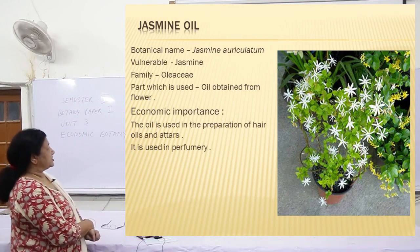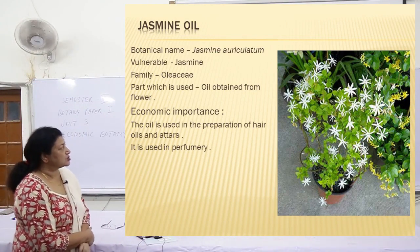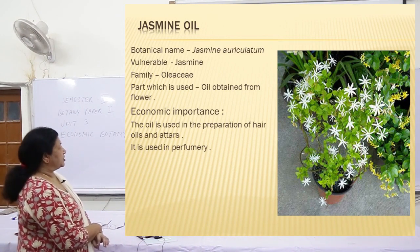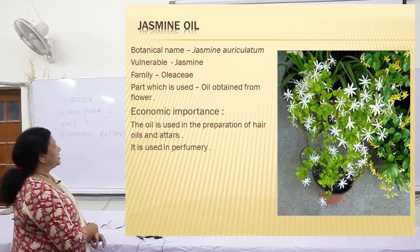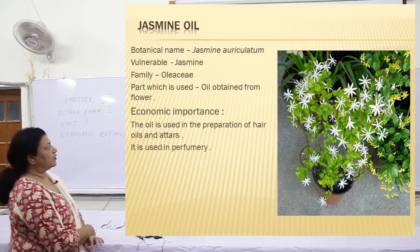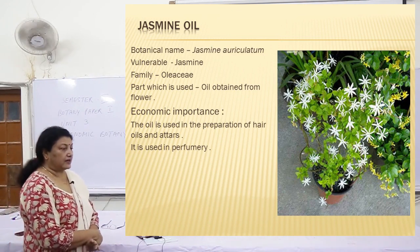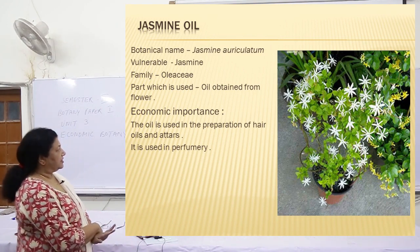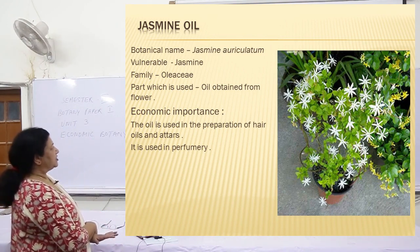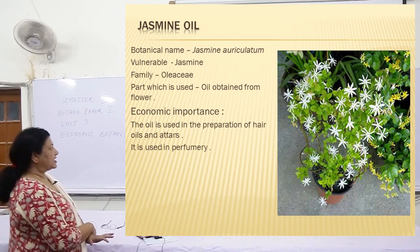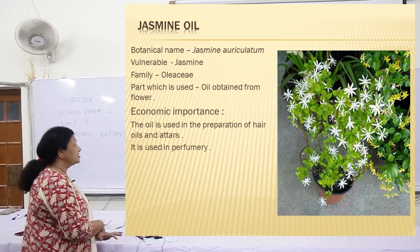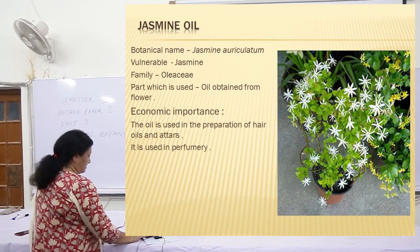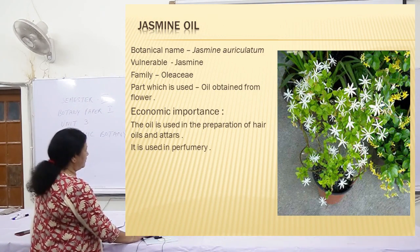Coming to jasmine oil. Botanical name: Jasminum auriculatum. Vernacular name: jasmine. Family: Oleaceae. The oil is obtained exclusively from the flowers, unlike other oils obtained from leaves or bark. It is used for preparation of hair oils and ittar. The basic use of this oil is for perfumes.